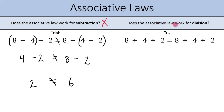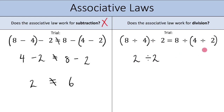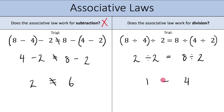Does the associative law work for division? Our trial: 8 divided by 4 divided by 2. On the left, (8÷4) first gives 2, then 2÷2 equals 1. On the right, (4÷2) first gives 2, then 8÷2 equals 4. And 1 does not equal 4, which means the associative law does not work for division.